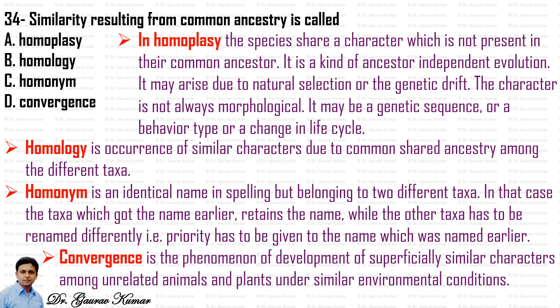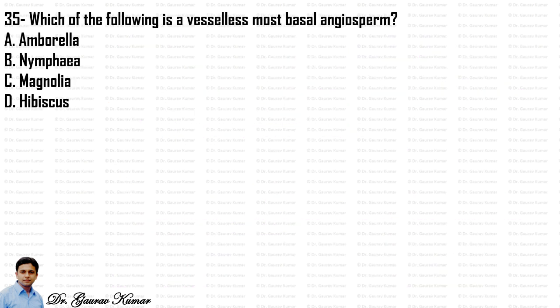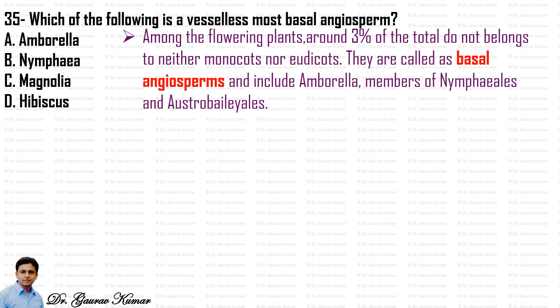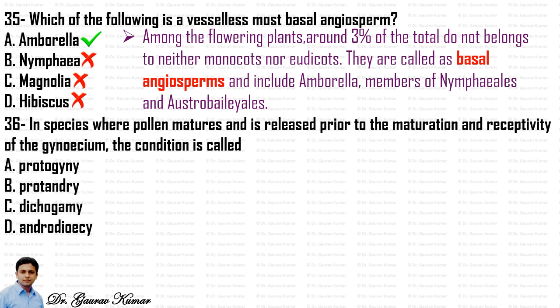The correct answer is homology — similarity resulting from common ancestry. Next question: which is a vessel-less, most basal angiosperm? Among flowering plants, around 3% belong to neither monocots nor eudicots; they are called basal angiosperms and include Amborella, members of Nymphaeales, and Austrobaileyales. The correct option is Amborella.